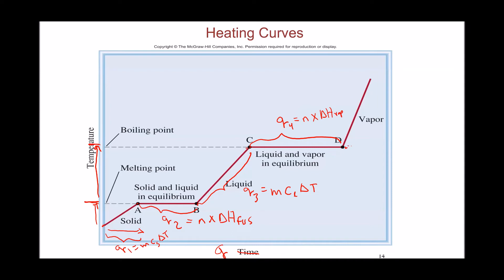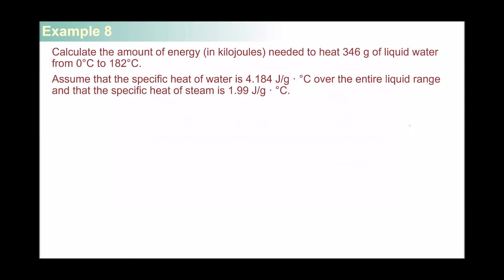After boiling, heat is used to raise the temperature of the gas: Q5 = mass × specific heat of gas × ΔT of the vapor. It's important to note that the specific heat of the solid phase differs from the specific heat of the liquid phase and that of the gaseous phase — even for the same substance, specific heat varies by phase.